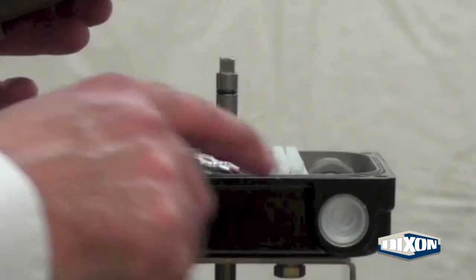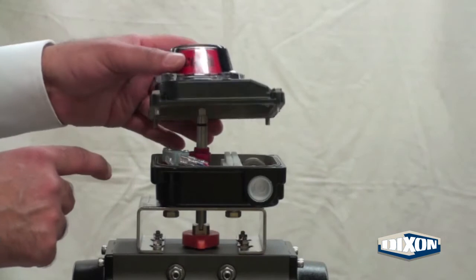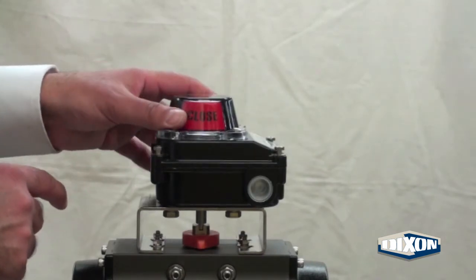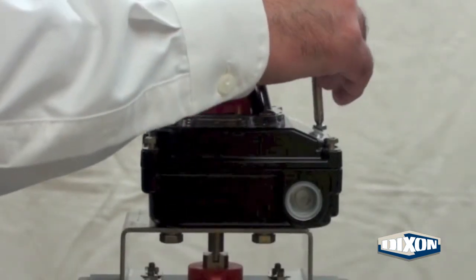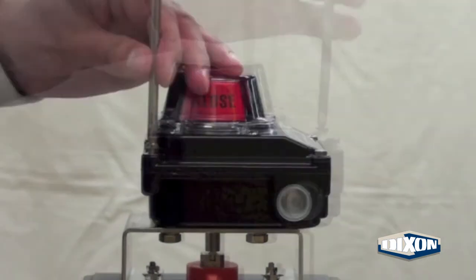Make sure the gasket is completely in the groove of the switch body. Place the cover on carefully so the shaft goes into the square hole in the indicator. Tighten the four bolts on the limit switch cover.